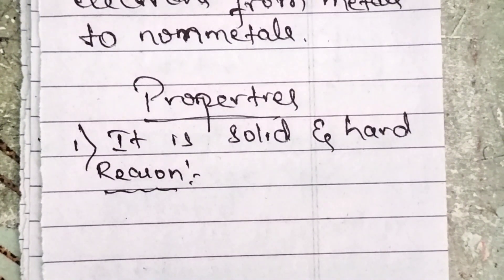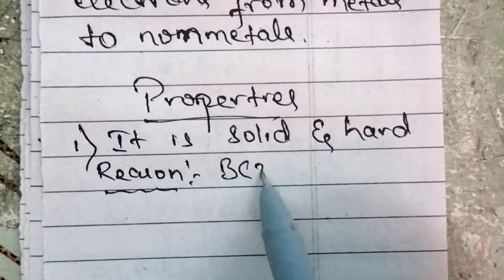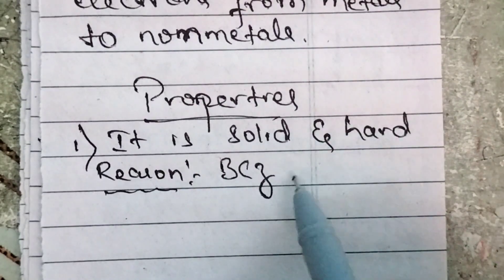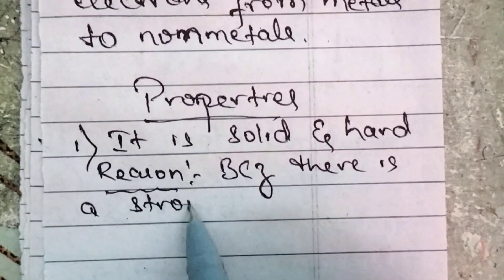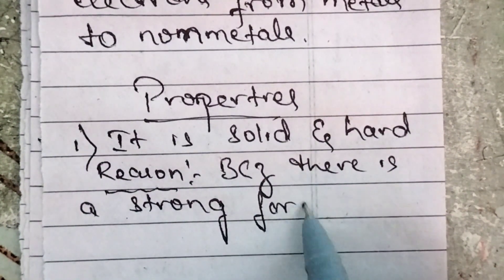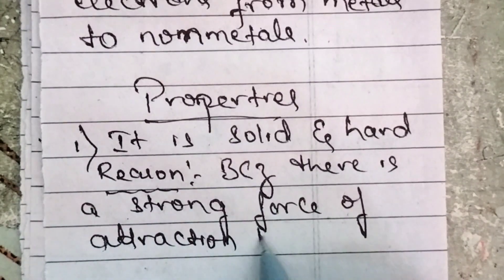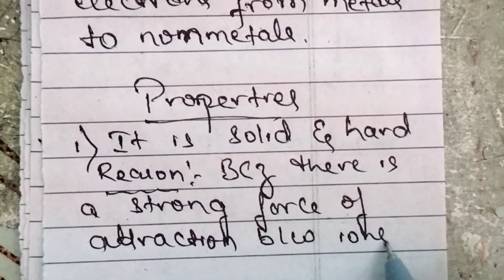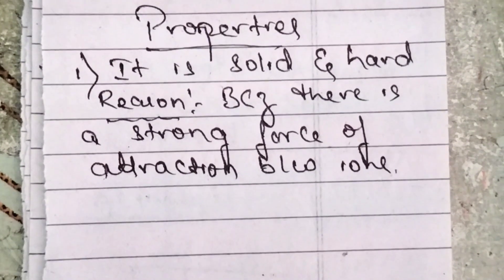It is solid and hard. The reason for this: why are ionic compounds solid and hard? Because there is a strong force of attraction between ions. Due to this strong force of attraction, ionic compounds are solid and hard. This is the first property of ionic compounds.